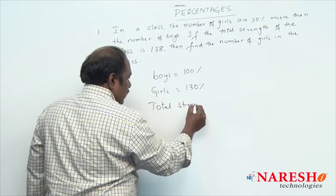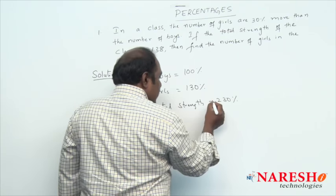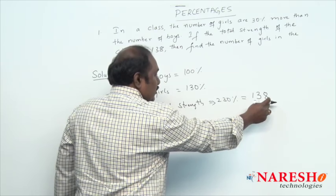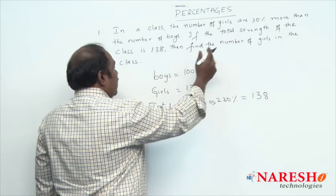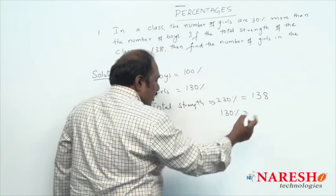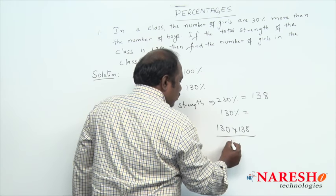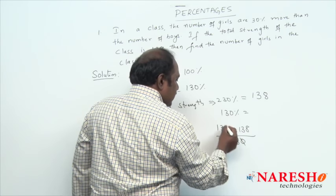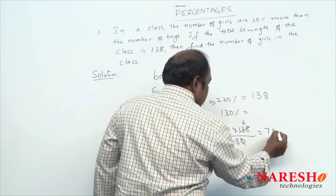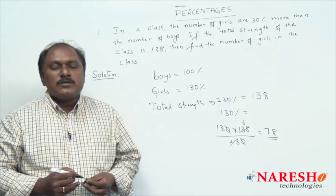The total strength will be 230 percent. This 230 percent should be equal to 138, the total strength of the class. The question asks to find the number of girls, so directly find what is 130 percent. Solving: 130 × 138 / 230. Cancelling zeros, 23 goes into 138 six times, 6 × 13 = 78. So the answer is 78. These are the two methods to solve this problem.